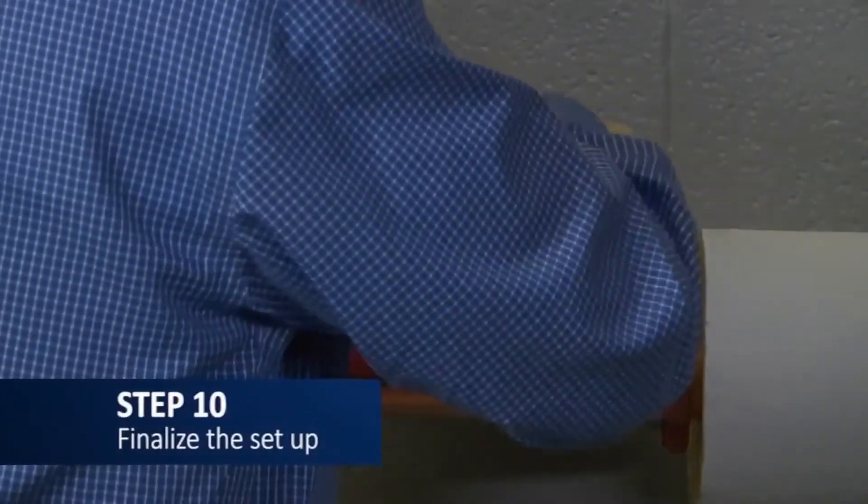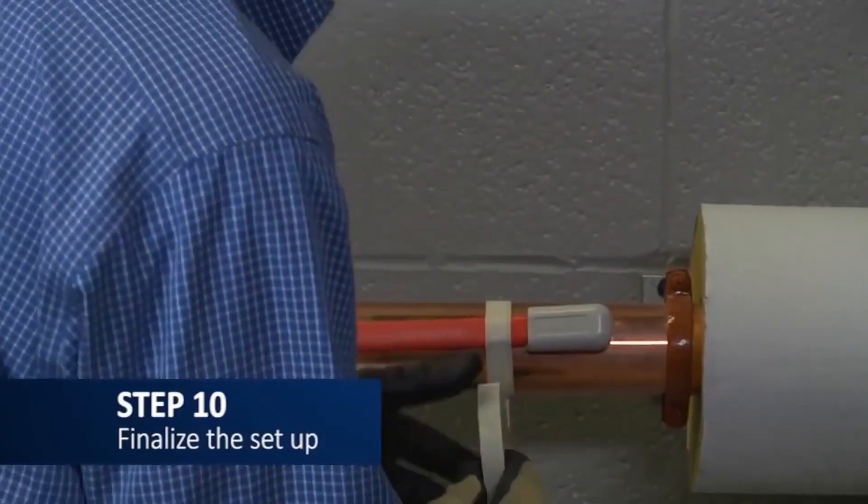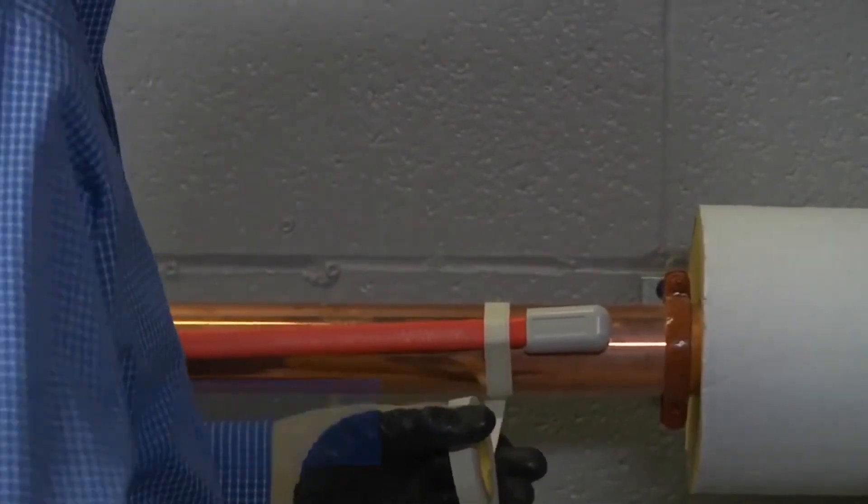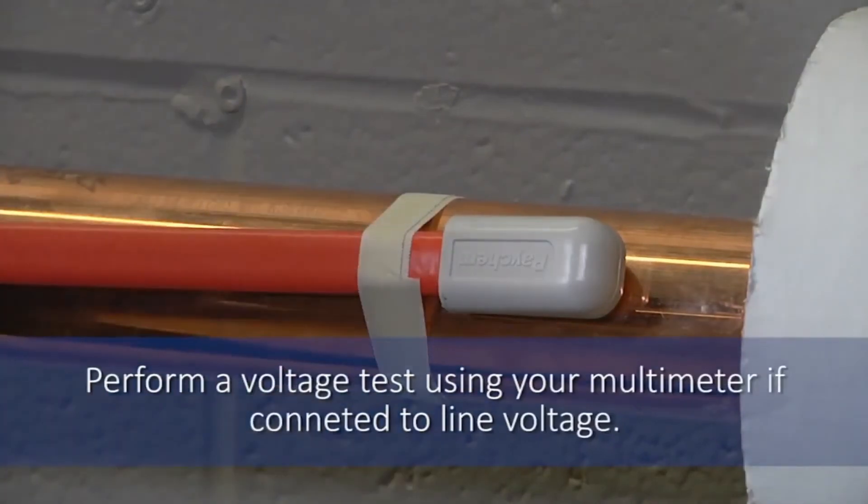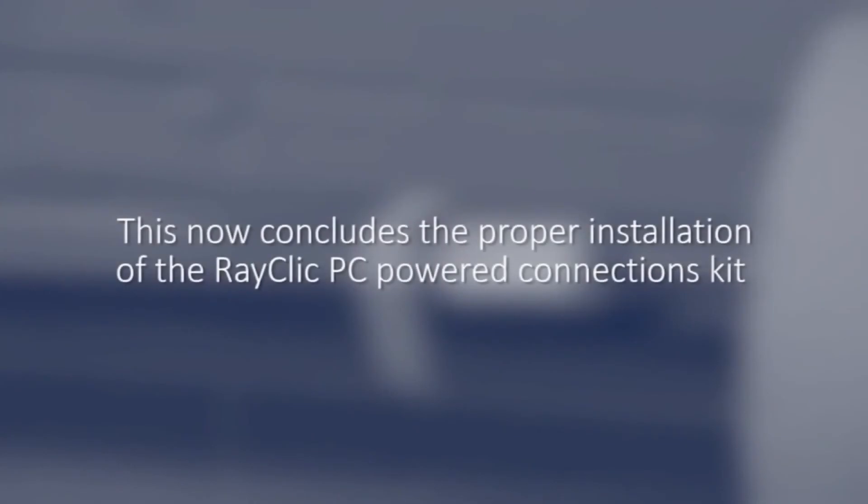To finalize the setup, tape the end of the heating cable to the pipe with some glass tape and perform a voltage test using your multimeter after connecting to line voltage. This now concludes the proper installation of your RayClick PC-Powered Connection Kit.